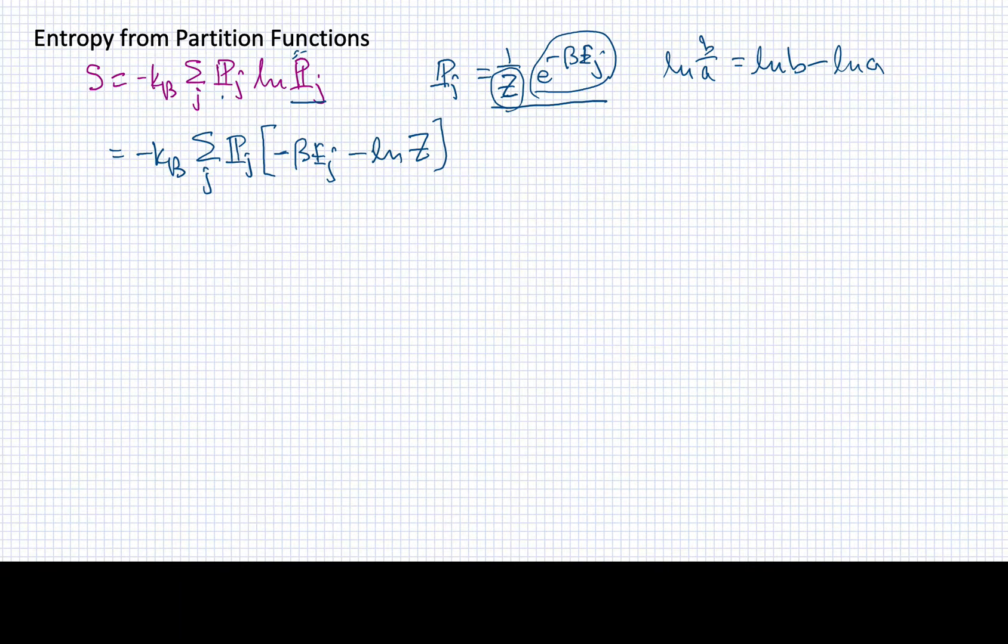Where does this take me? I can separate these two terms out. The first term will be plus kb times beta times the summation over j of the probability of the jth state times the energy of the jth state. The second term is going to give me kb sum over j log of z times the probability of j.